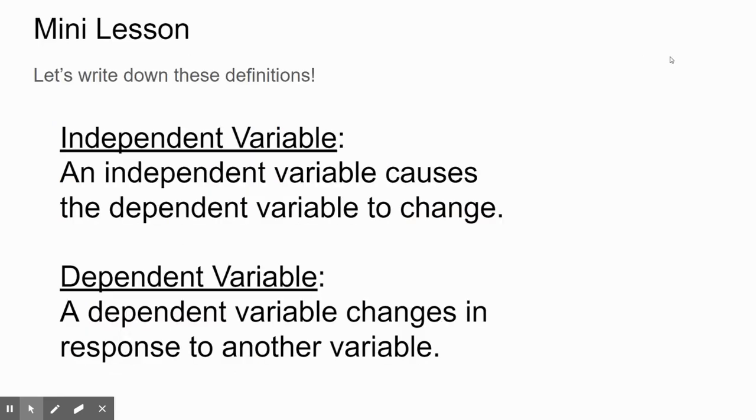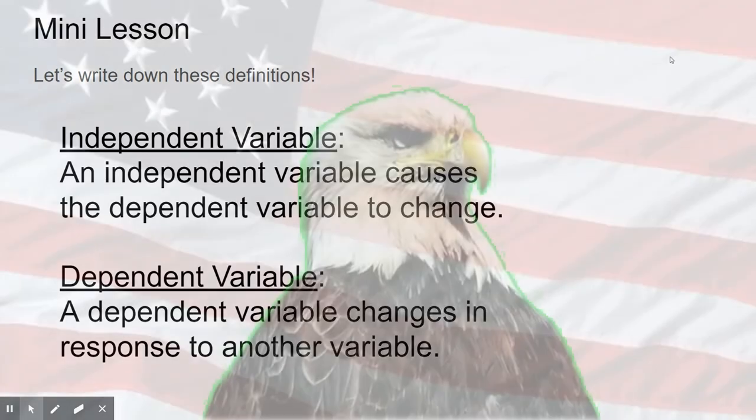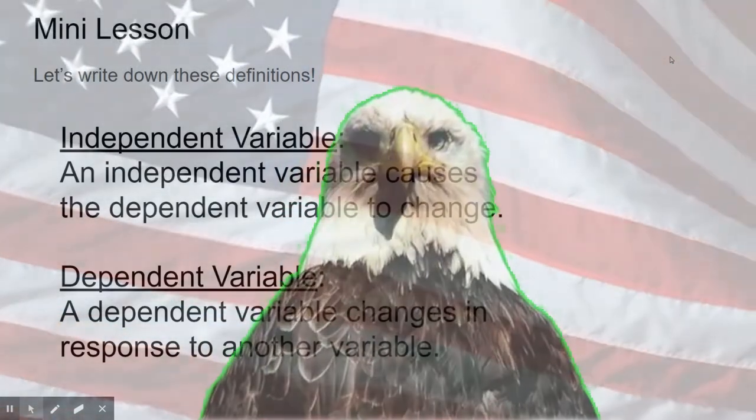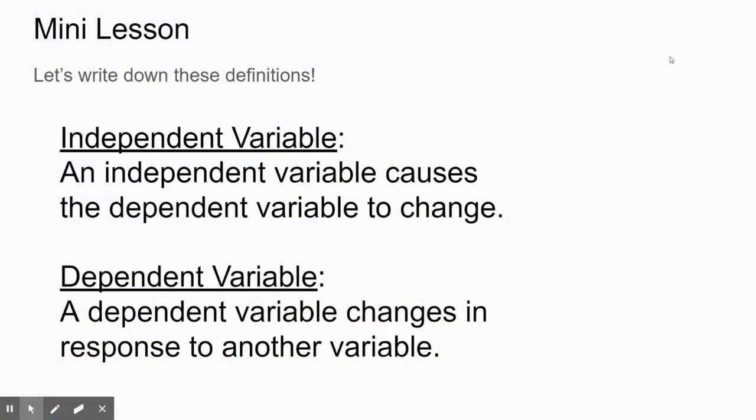What I'd like you to do is write down these two definitions. Our definition for an independent variable—think about where you've heard independent before. In this case, it's a little bit different because an independent variable is something that causes the dependent variable to change. The independent variable won't be impacted by any outside force. It'll just be whatever it is.